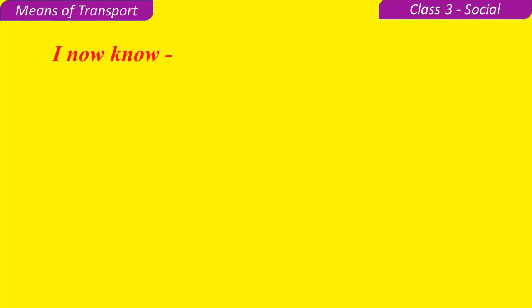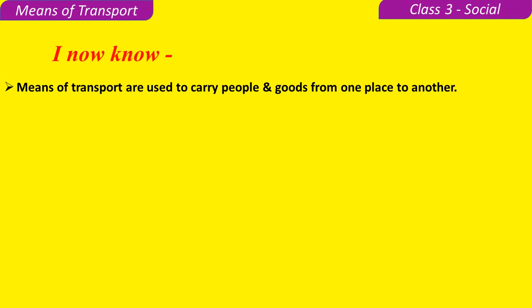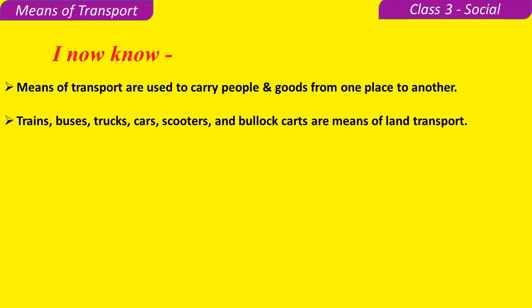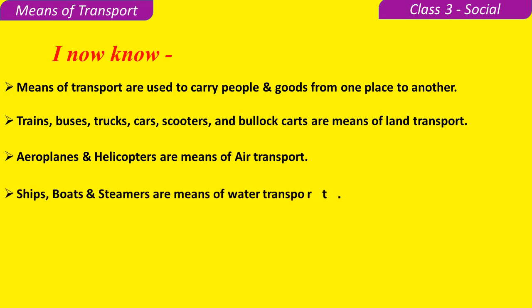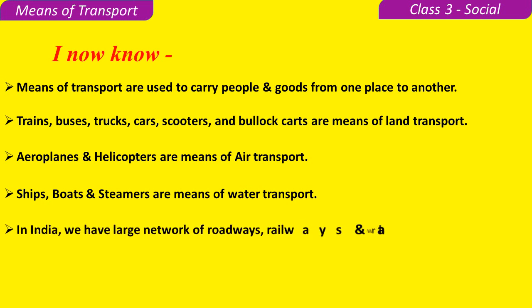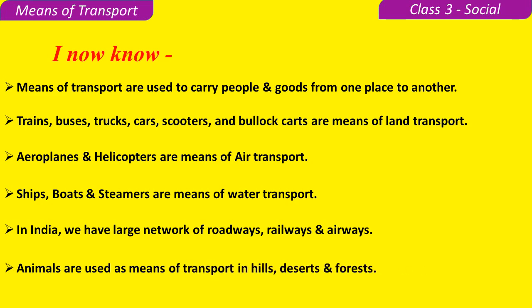Now I know: means of transport are used to carry people and goods from one place to another. Trains, buses, trucks, cars, scooters, and bullock carts are means of land transport. Airplanes and helicopters are means of air transport. Ships, boats, and steamers are means of water transport. In India, we have a large network of roadways, railways, and airways. Animals are used as means of transport in hills, deserts, and forests.